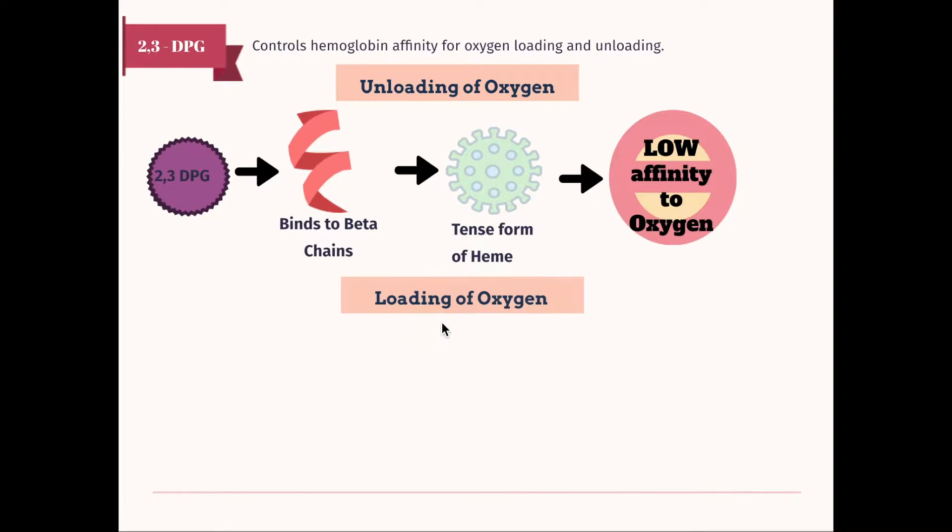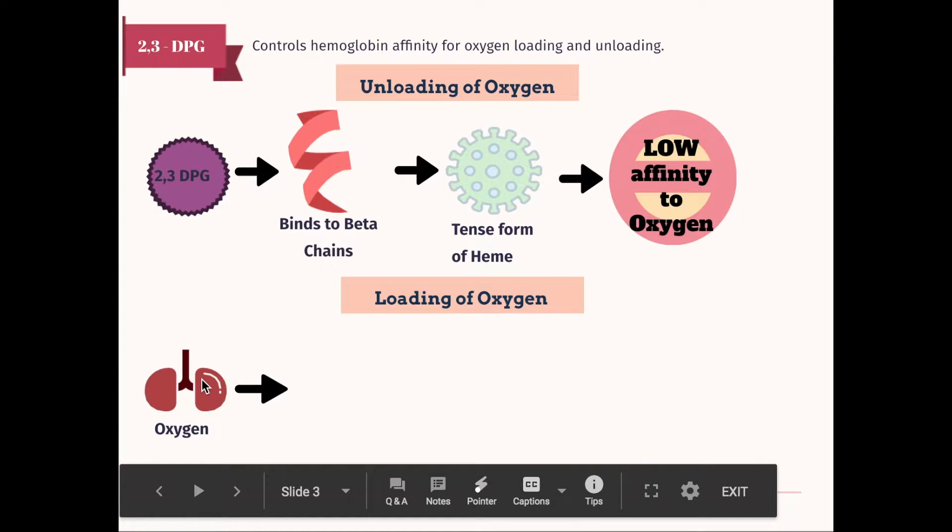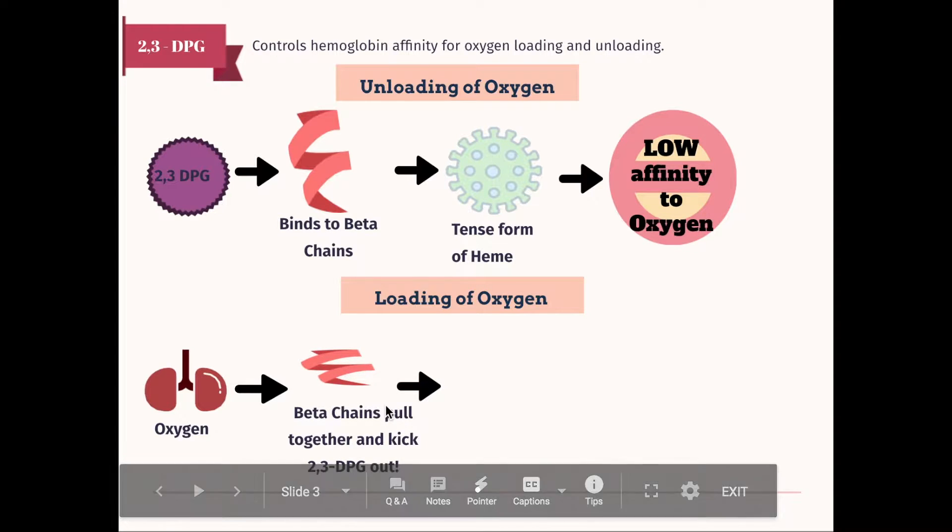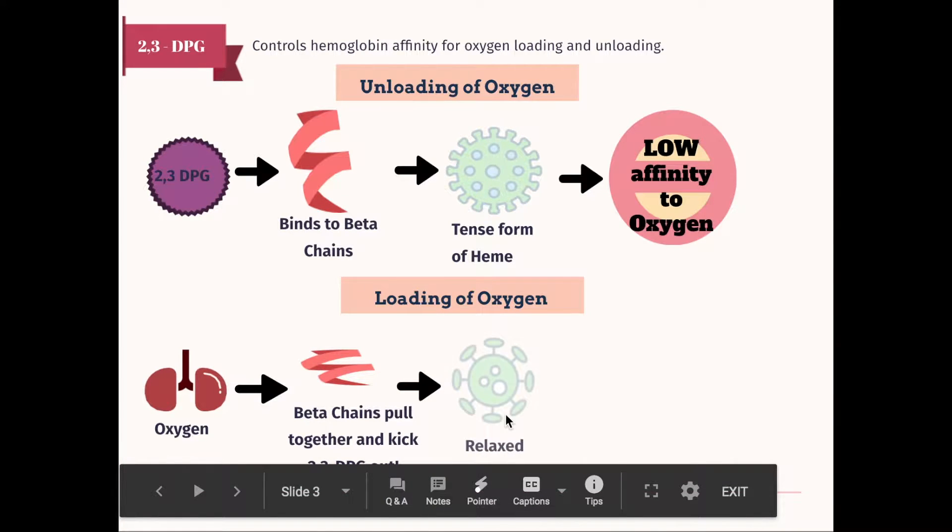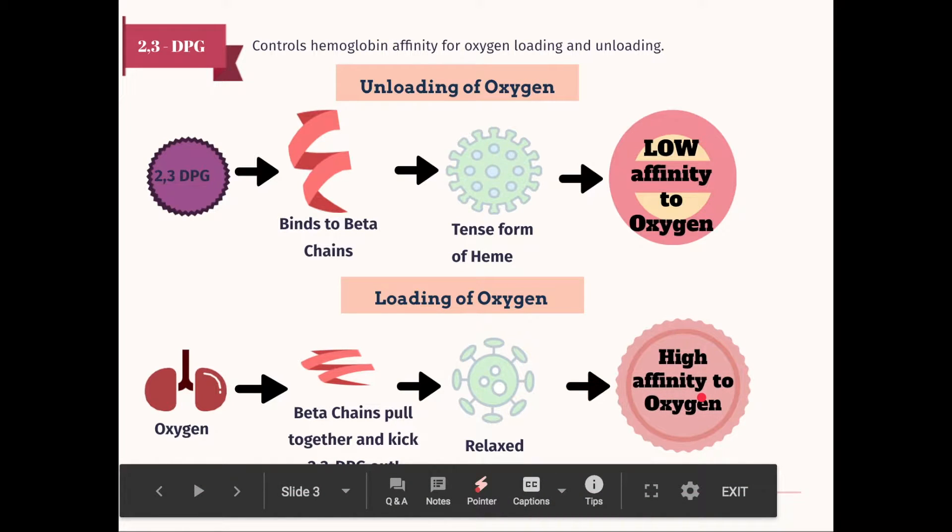As for loading of oxygen, let's start at the lungs. So there's a lot of oxygen in the lungs. And that causes the beta chains to pull together and kick out the 2,3-DPG. And then it turns into the relaxed form. And then the end result will be the hemoglobin molecule will have high affinity to oxygen.